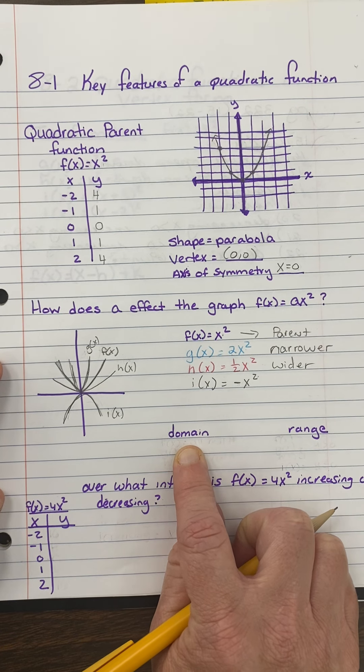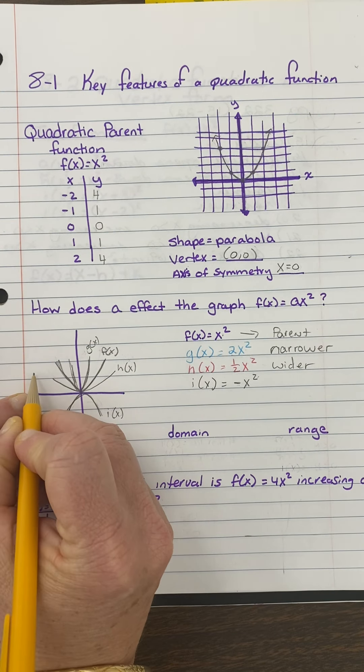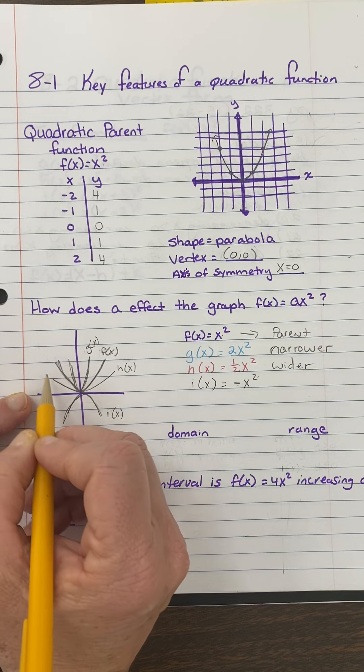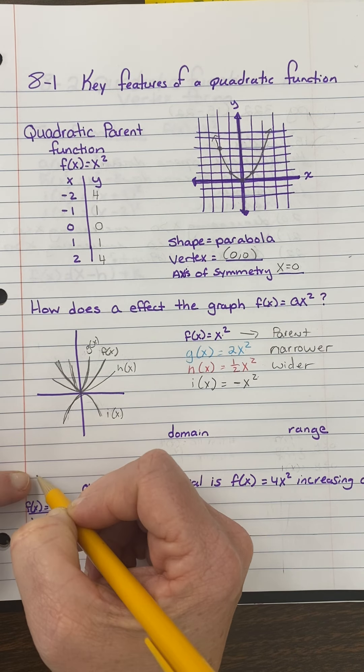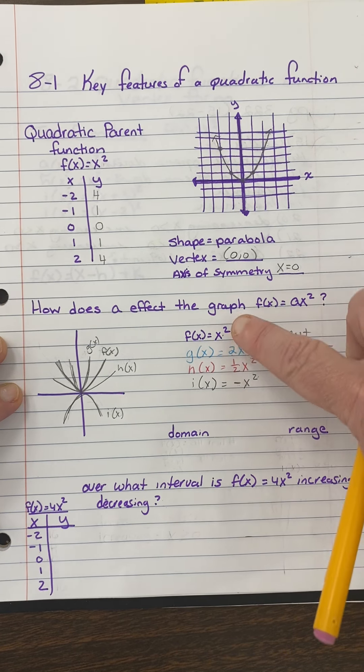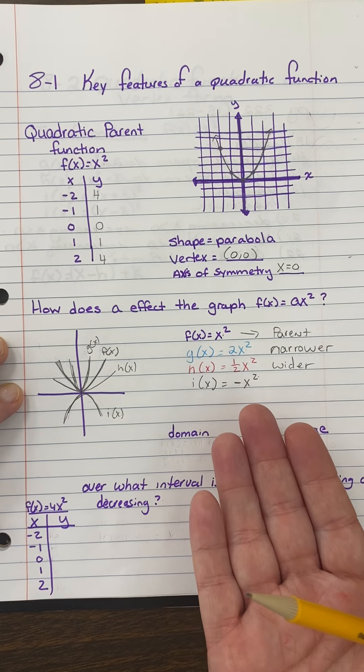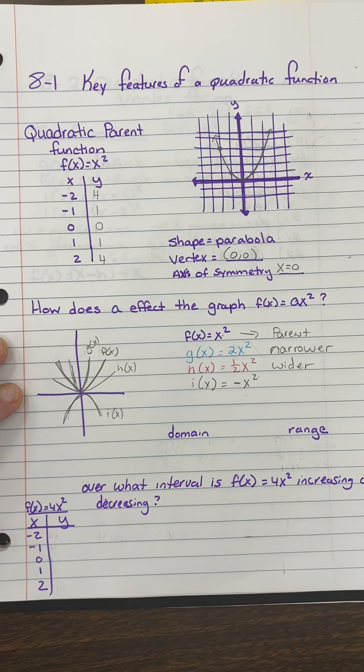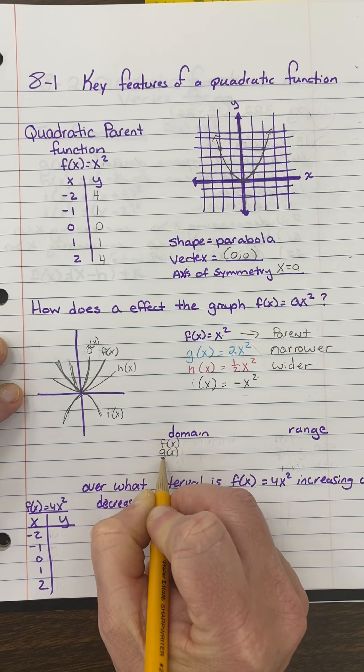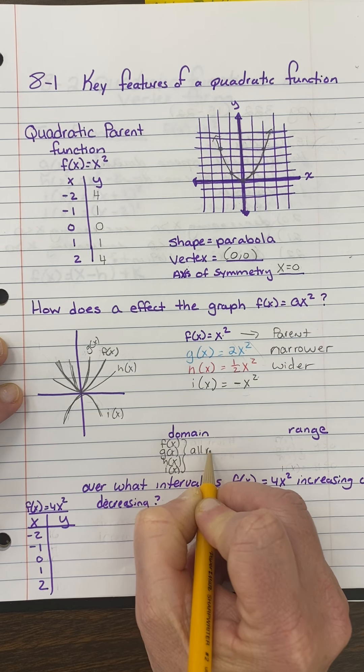Now let's talk about the domain and range. So domain is what numbers I can put in. Another way to look at it is what can I put in? What values can I put in for x? Well, in all of these functions, I can put in negative numbers. There's nothing that says I can't put in negative numbers. I can put in decimals. I can put in every number I can think of. So for f of x, g of x, h of x, and i of x, my domain for all of them is all real numbers.